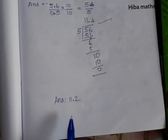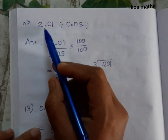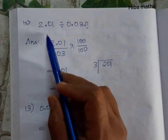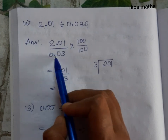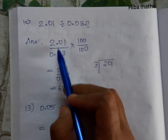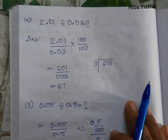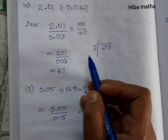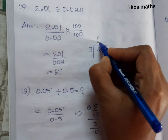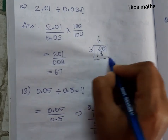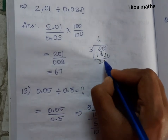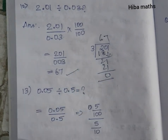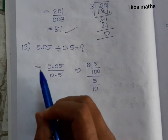Twelfth question: 2.01 divided by 0.03. It is very easy. 2.01 divided by 0.03 — multiply both by 100. Decimal point removed: 201 divided by 3. 3 sixes are 18; bring down 9: 3 sevens are 21; remainder 0. Answer is 67.